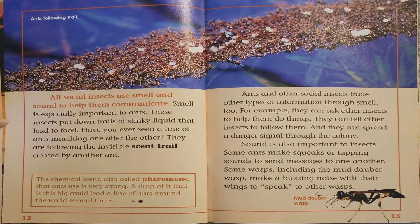Ants and other social insects trade other types of information through smell too. For example, they can ask other insects to help them do things. They can tell other insects to follow them. And they can spread a danger signal through the colony.